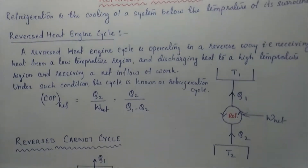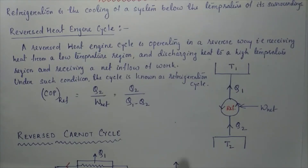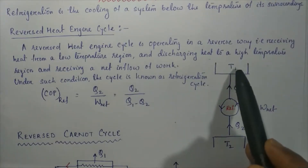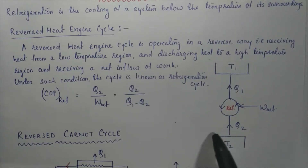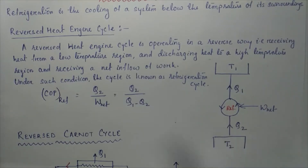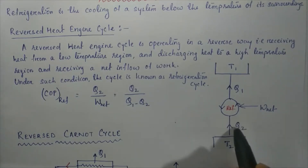Here we draw a line diagram of a reverse heat engine cycle. There is a thermal energy reservoir maintained at temperature T2 and another thermal energy reservoir maintained at temperature T1. Q2 is extracted from this reservoir and thrown to the surroundings. The magnitude of Q2 is very low compared to the energy level of the surroundings, so Q2 does not automatically flow to the surroundings.